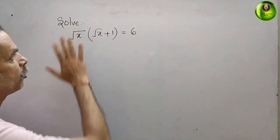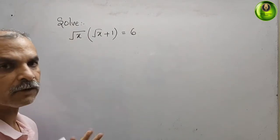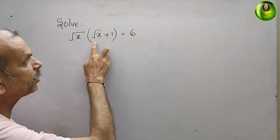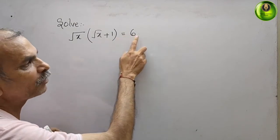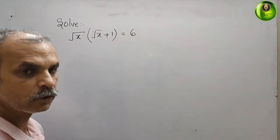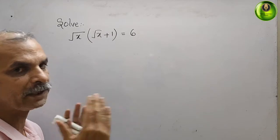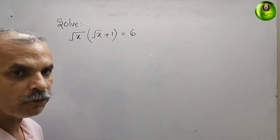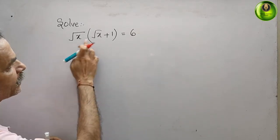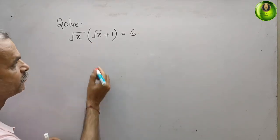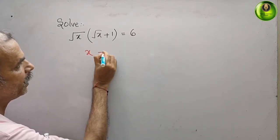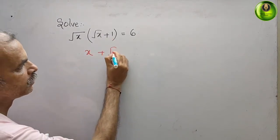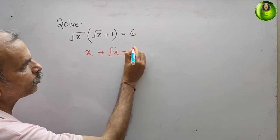The question is: solve √x(√x + 1) = 6. First, we multiply out the bracket: √x × √x gives x, and √x × 1 gives √x, so we get x + √x = 6.